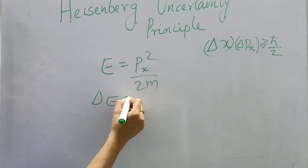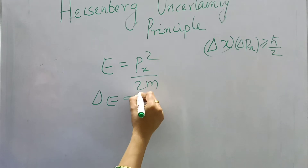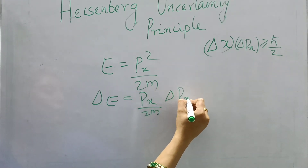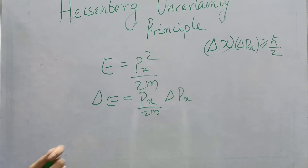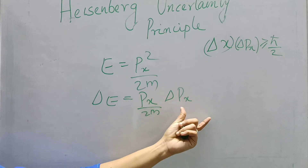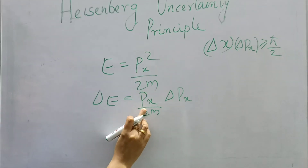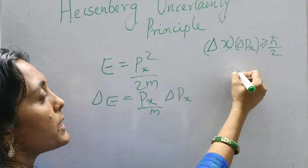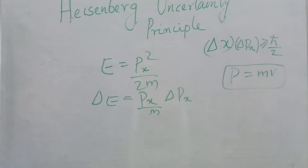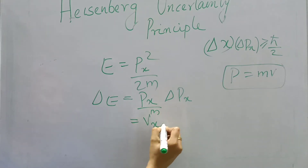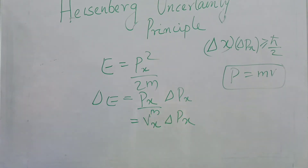What is the uncertainty in its energy? Delta E can be written as (px / 2m) into delta px. Now, px/2m can also be written as vx. So delta E is equal to vx into delta px.